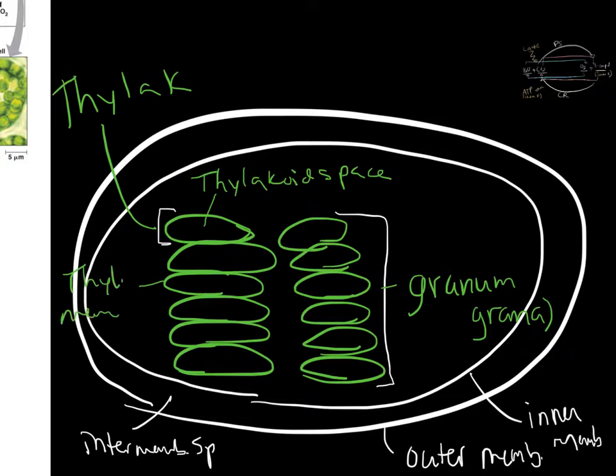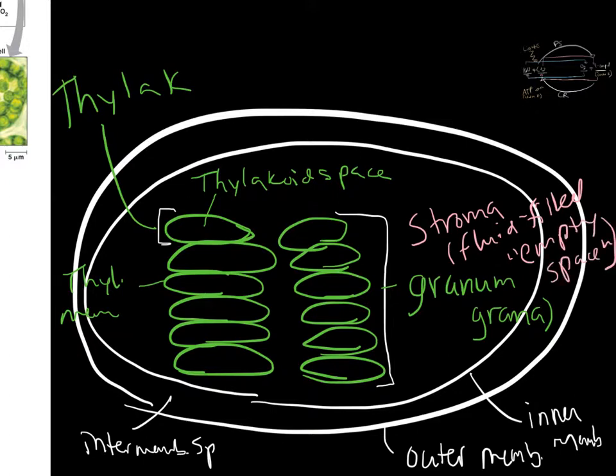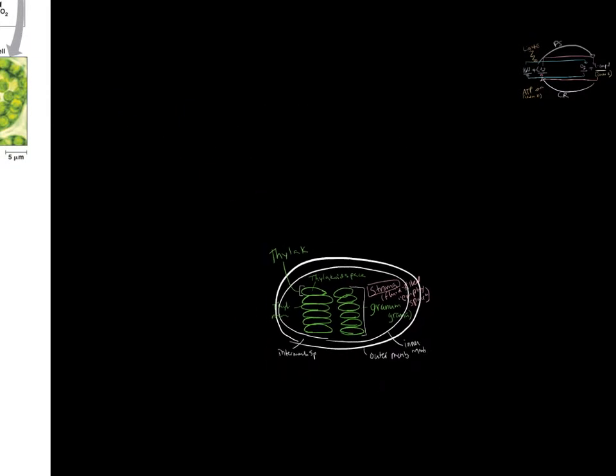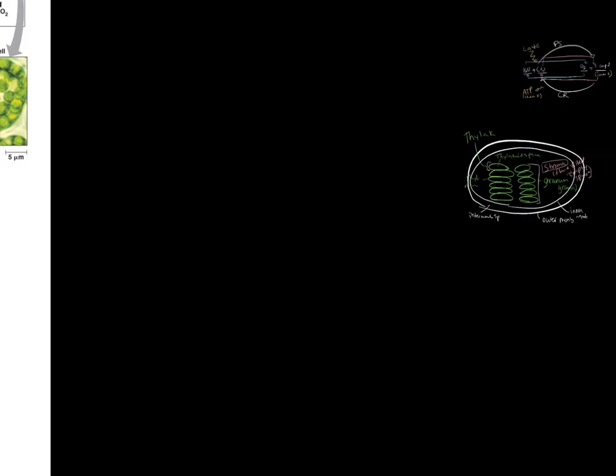The membrane of the thylakoid is called the thylakoid membrane. The fluid surrounding the thylakoids is called the stroma—the fluid-filled space, though it's full of diffusing particles. The stroma is on the outside of the thylakoid. That's what our chloroplast looks like.